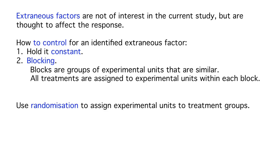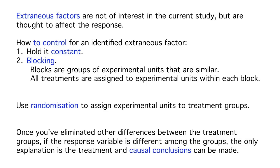After randomization, when we average out this chance variation, the treatment groups are essentially the same. Once we have a randomized experiment to compare treatments, if we observe differences among the treatment groups, we can conclude that it was the different treatments that caused the difference in the response. The idea is that we've eliminated any other differences between the groups, so if the response variable is different, the only explanation is the different treatments, and cause and effect conclusions can then be made.